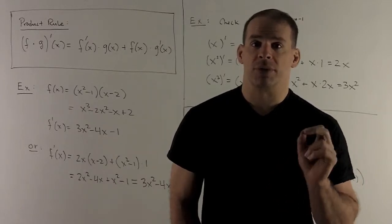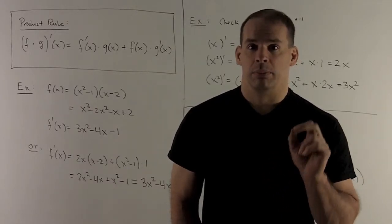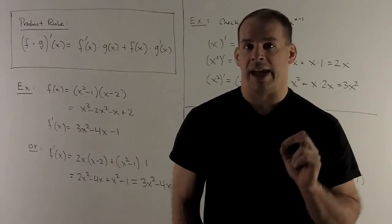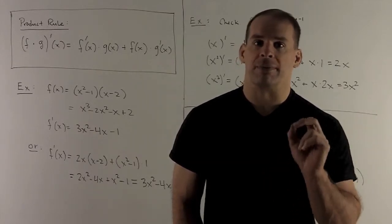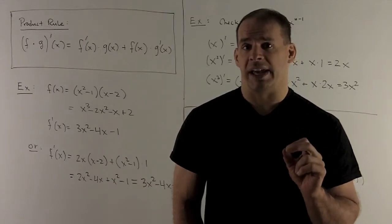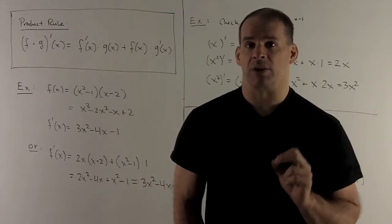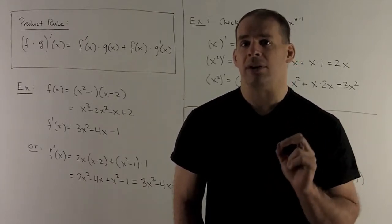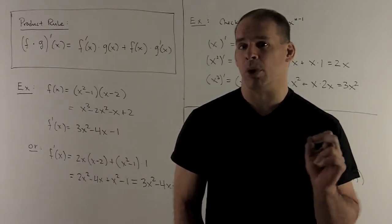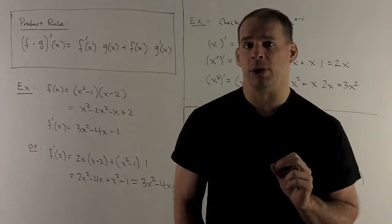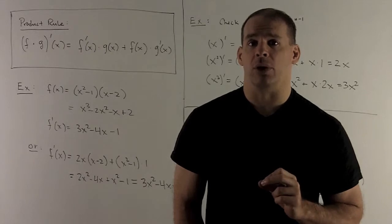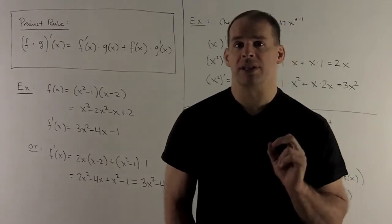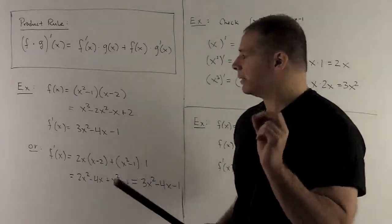First few examples are just making sure we get the answer for things that we already know. For my first example, we'll take (x² - 1)(x - 2). We know how to do this one because all we need to do is multiply through, we get a polynomial, and then we just apply our rule for polynomials. In this case, when you multiply through, you're going to get x³ - 2x² - x + 2.